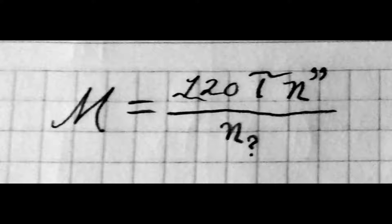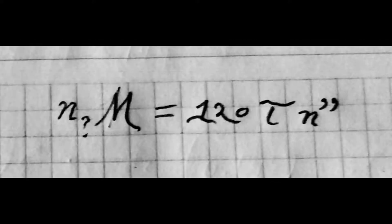Okay, this conversion is super quick and super easy. We have to clear the denominator, so we're going to multiply both sides by n sub question mark. Now all we have left to do is divide 120 and T.